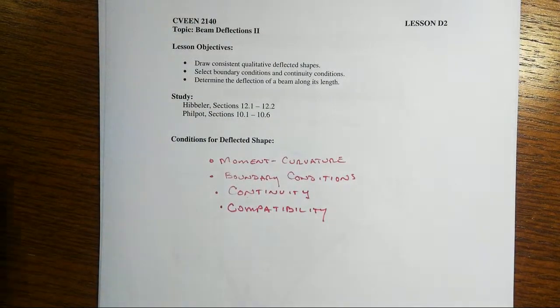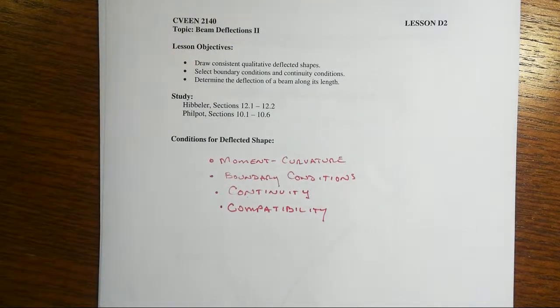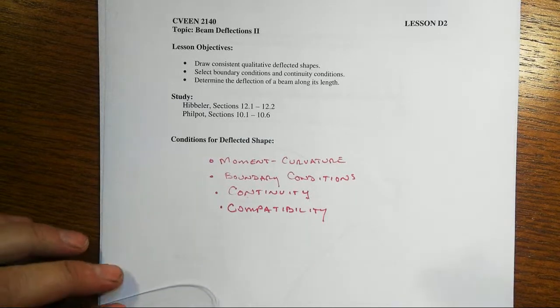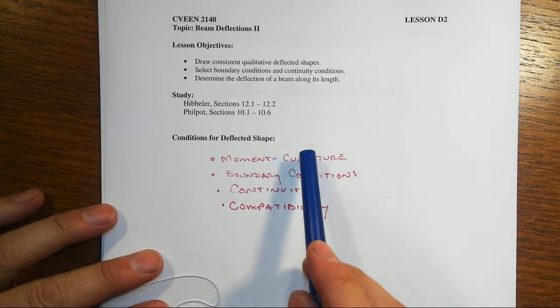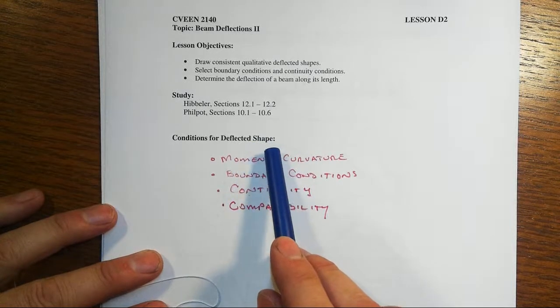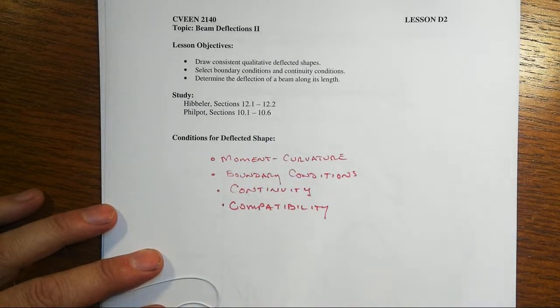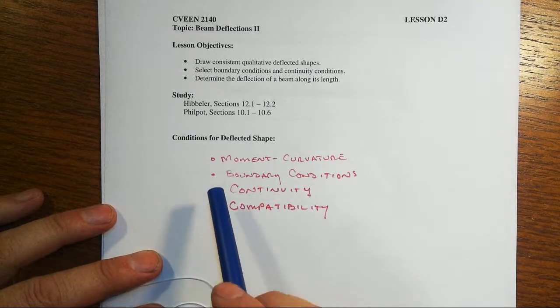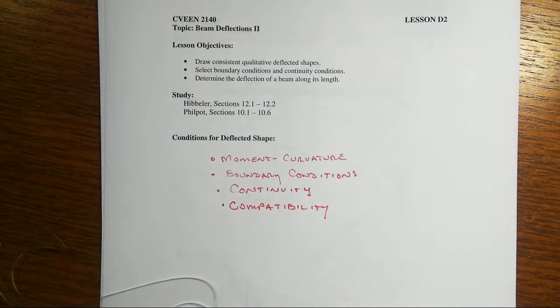All right, in this lesson we are going to focus on moment curvature relationships and boundary conditions and the aspects of how we can anticipate what the deflected shape might turn out to be for a beam responding to transverse loads. When we take a look at these deflected shapes that represent how the beam responds to the load, there are several things of crucial importance, one being the moment curvature relationship.